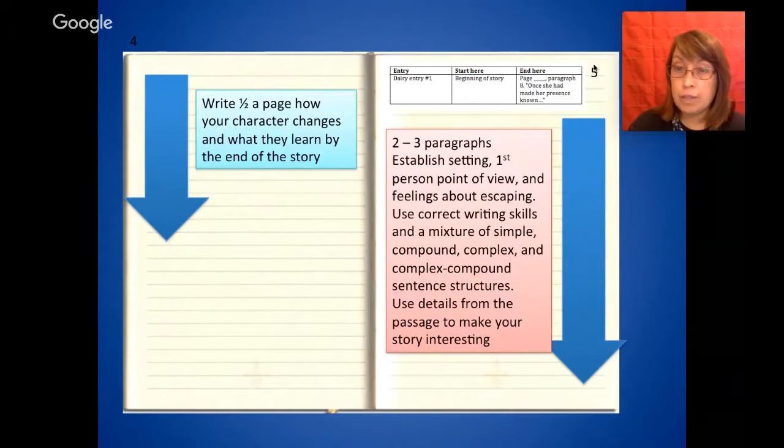On page five is the beginning of your actual diary entries, which will start on your next school day. Diary entry number one is where you're going to look at the story and you're going to read from the beginning of the story through paragraph eight, which starts with once she had made her presence known. So you read that section and then what you do is you stop and you think about your character and what they would be experiencing in that part of the story. And then you're going to write two to three paragraphs establishing your setting, your first person point of view, and your character's feelings about escaping or helping others escape. Use correct writing skills in a mixture of simple, compound, complex, and complex compound sentence structure. Use details from the passage to make your story interesting. So two to three paragraphs.